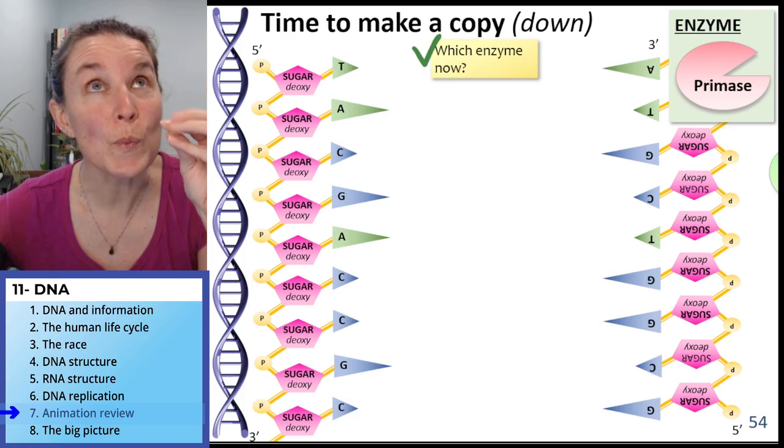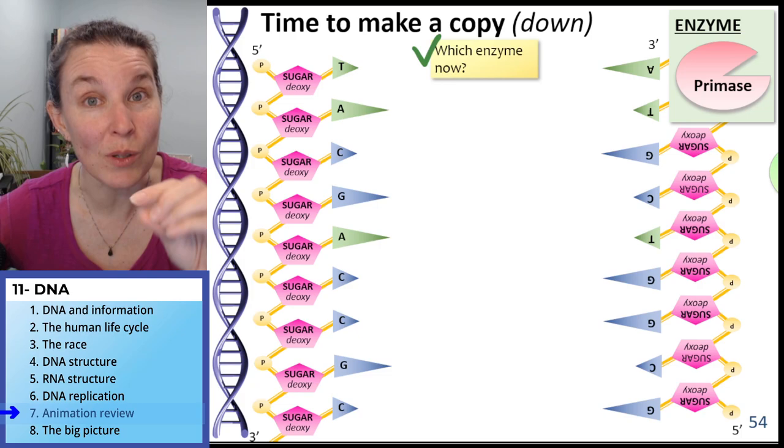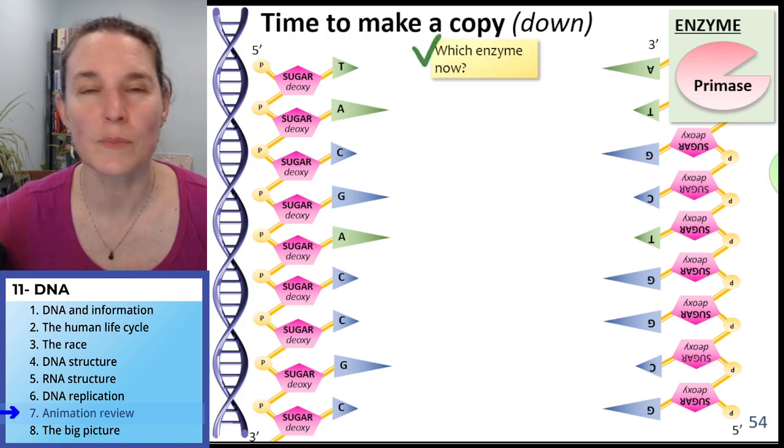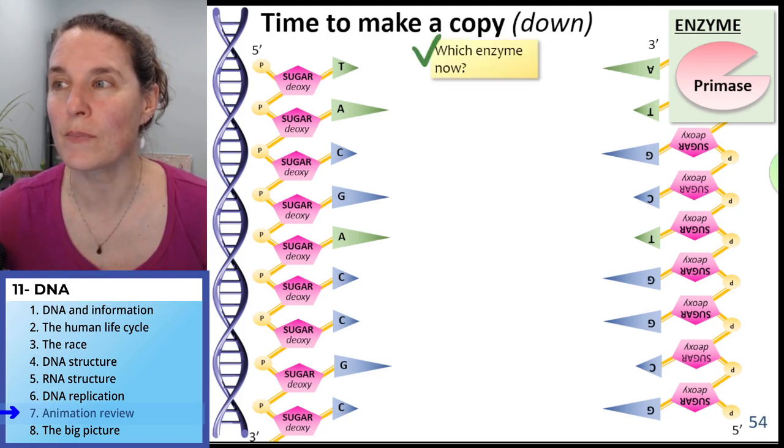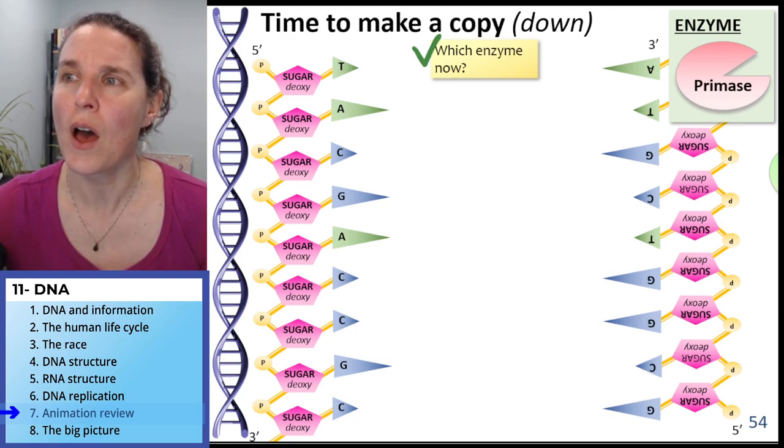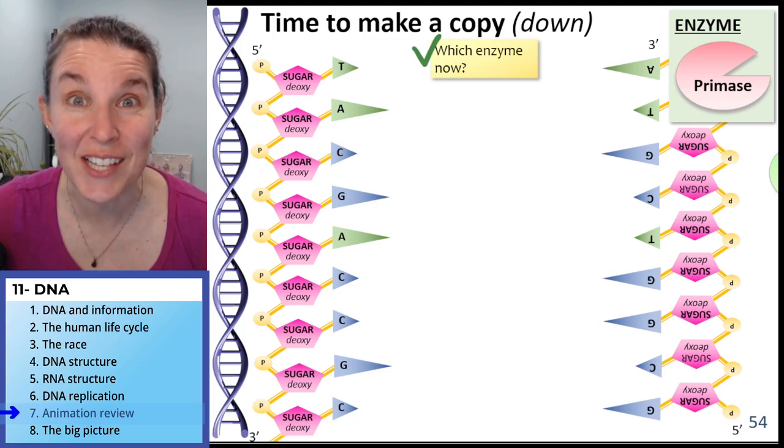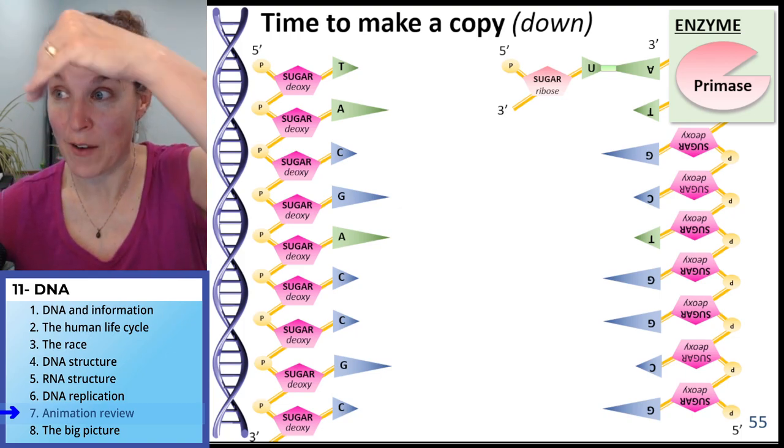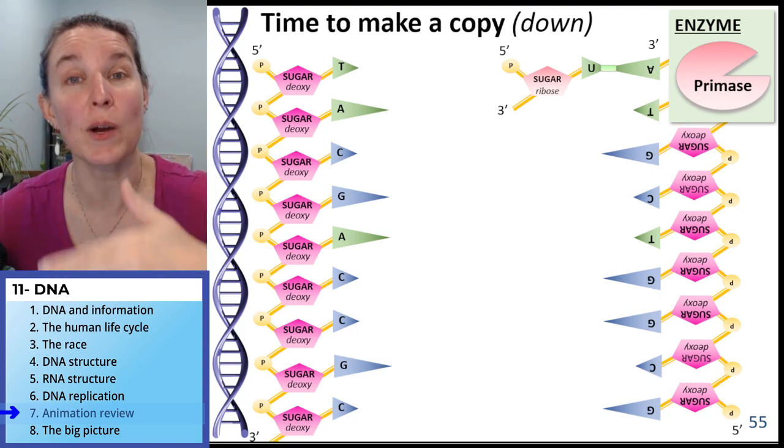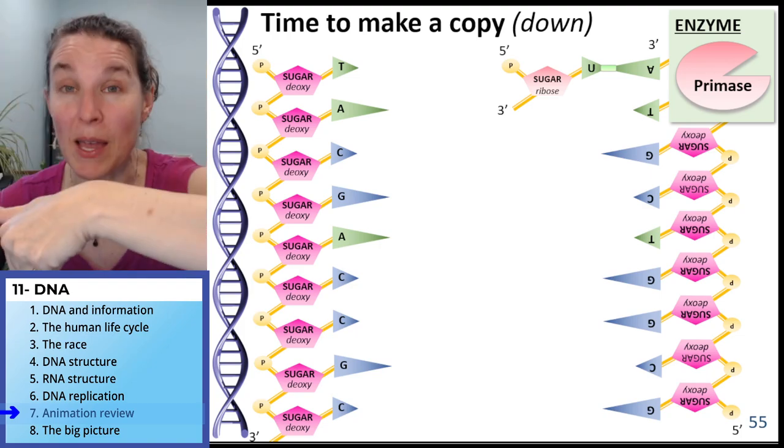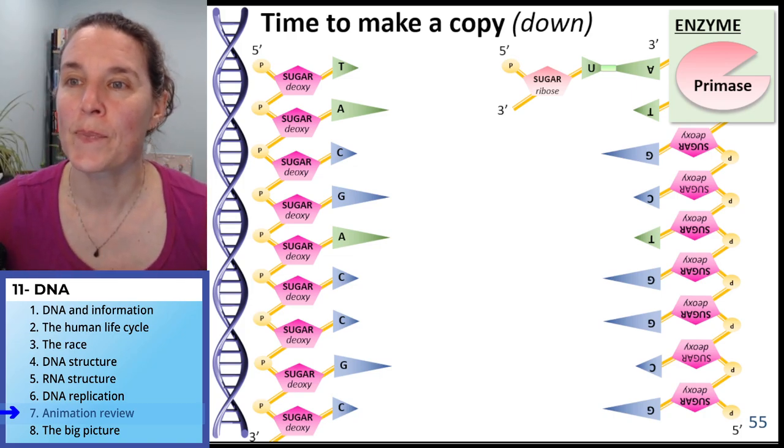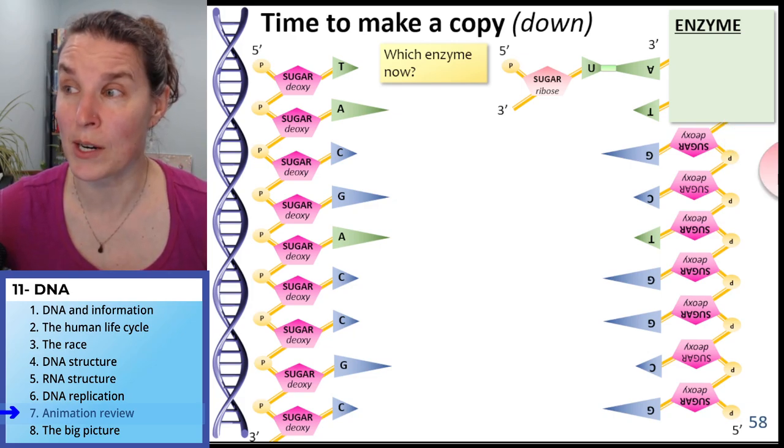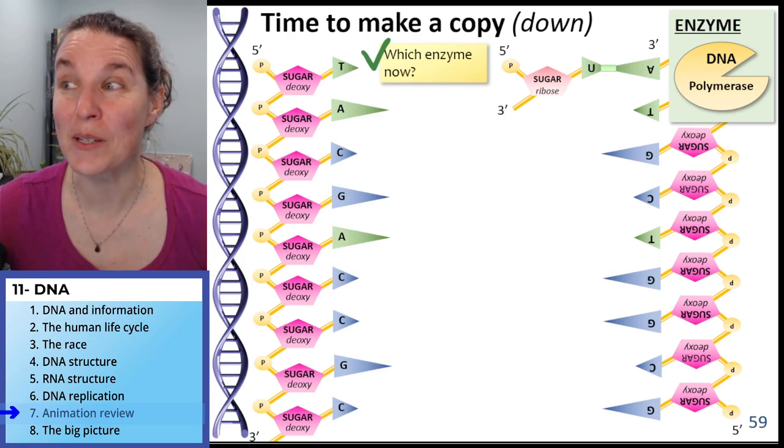DNA polymerase is going to build the new molecule in the 5 prime to 3 prime direction. So predict where you're going to lay down your primer. And which side are you going to lay it down? Because we were making a copy down. Since DNA polymerase has to build the new molecule in the 5 prime to 3 prime direction, if we have to build down, we're going to start with this strand on the right. Goodbye, primase. Who's coming in next? I'm saying DNA polymerase next. Yes, I got it right. DNA polymerase is here.